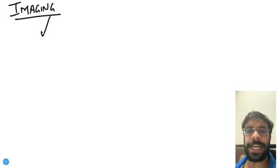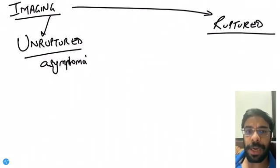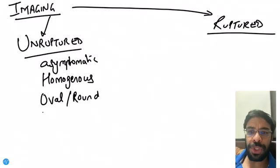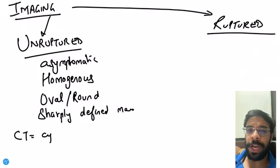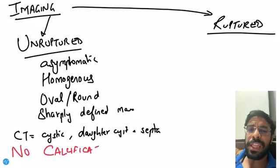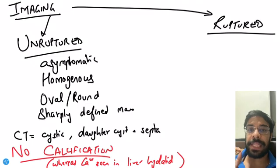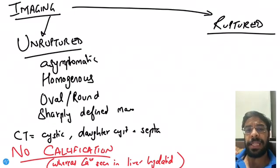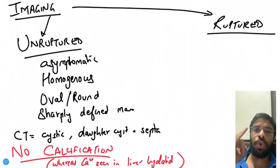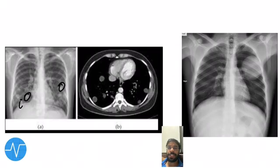Imaging of hydatid cysts can be divided into unruptured and ruptured. The unruptured cyst is asymptomatic, homogeneous, oval or round, and sharply well-defined. On CT, it appears cystic with daughter cysts or septa. The most important point is that there is no calcification — remember, liver hydatid shows calcification, but lung hydatid does not. Lesions can be single or multiple.